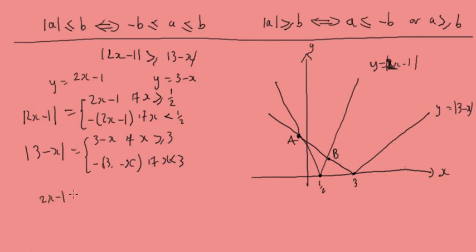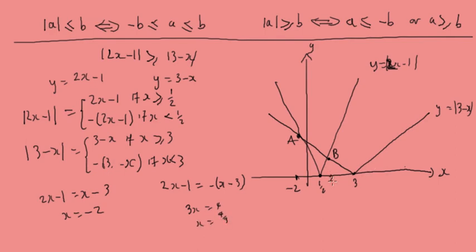Solving 2x minus 1 equals x minus 3 gives x equals minus 2, and solving 2x minus 1 equals minus(3 minus x) gives x equals 4 over 3. So the modulus of 2x minus 1 is greater than the modulus of 3 minus x when x is less than or equal to minus 2, or x is greater than or equal to 4 over 3.